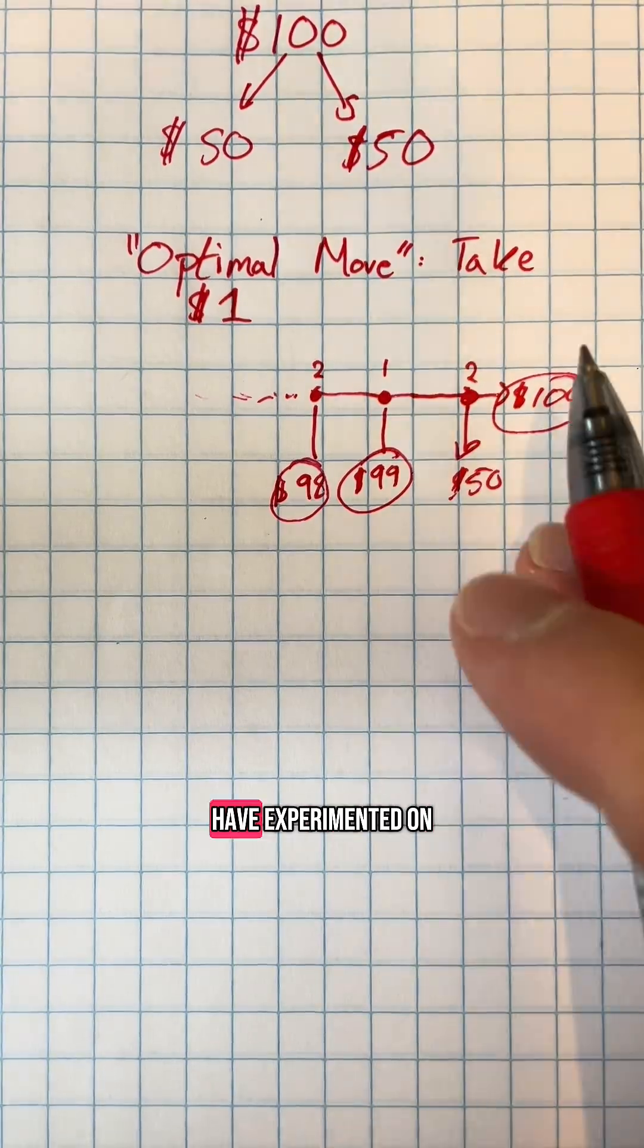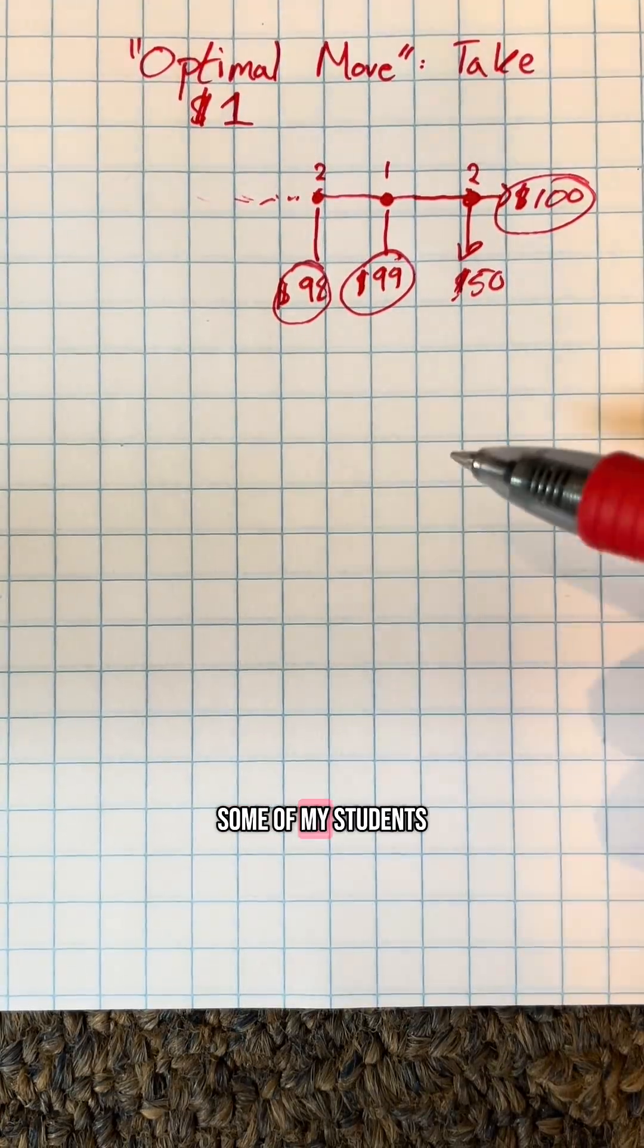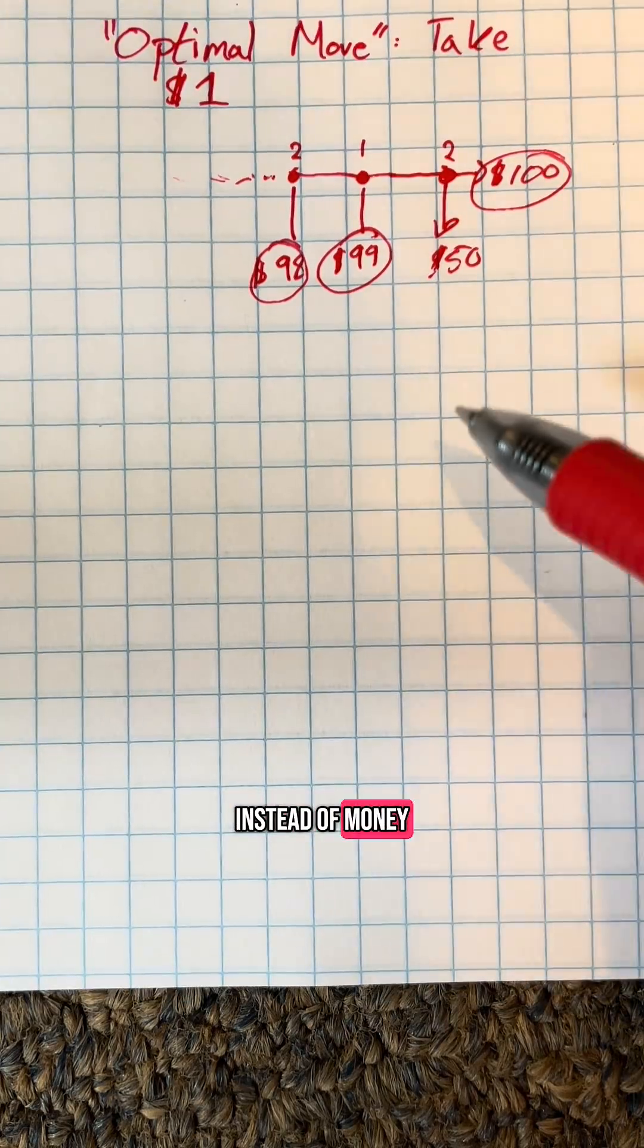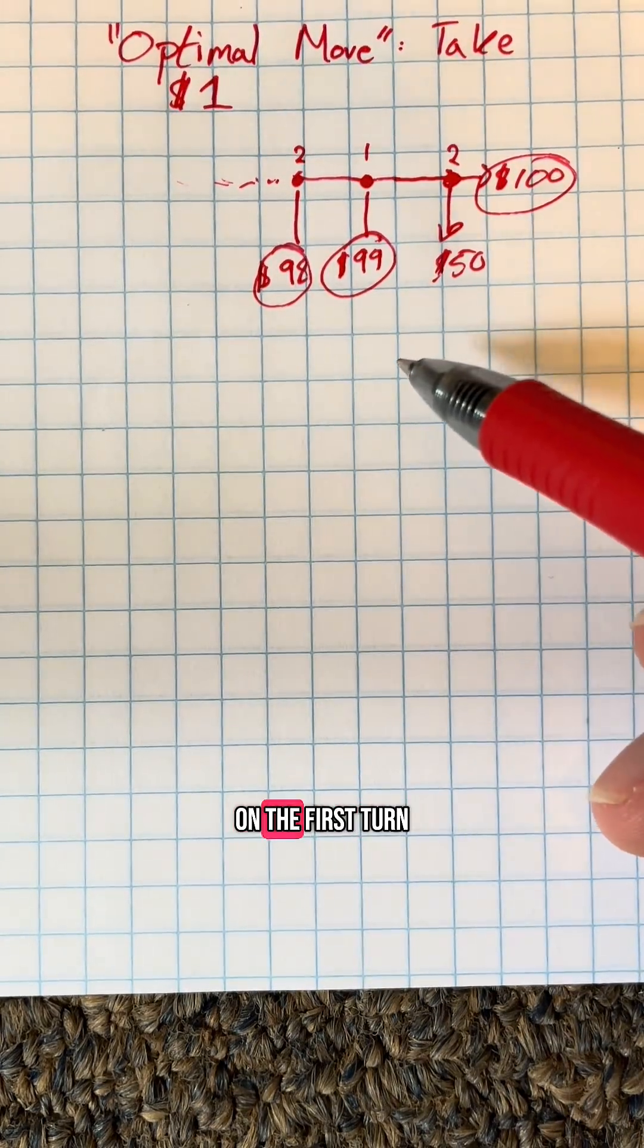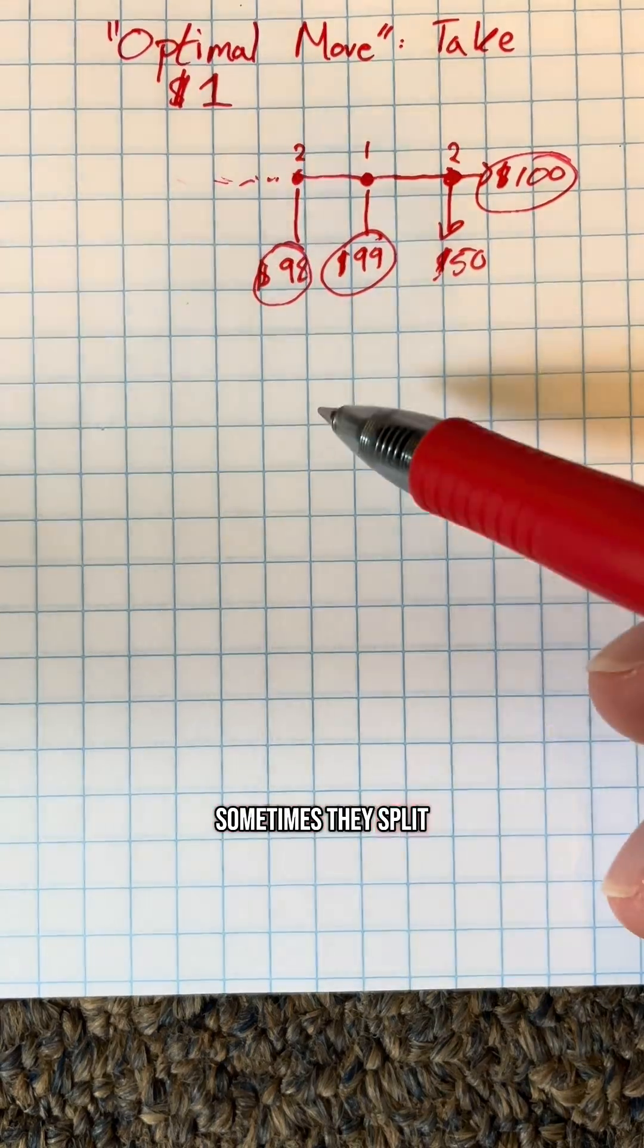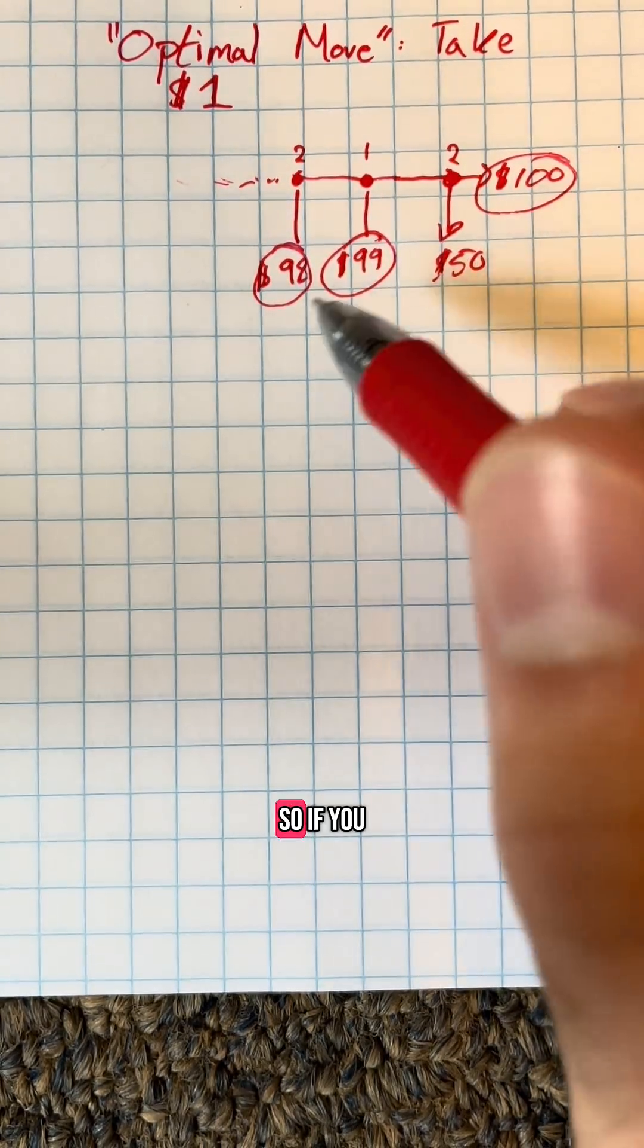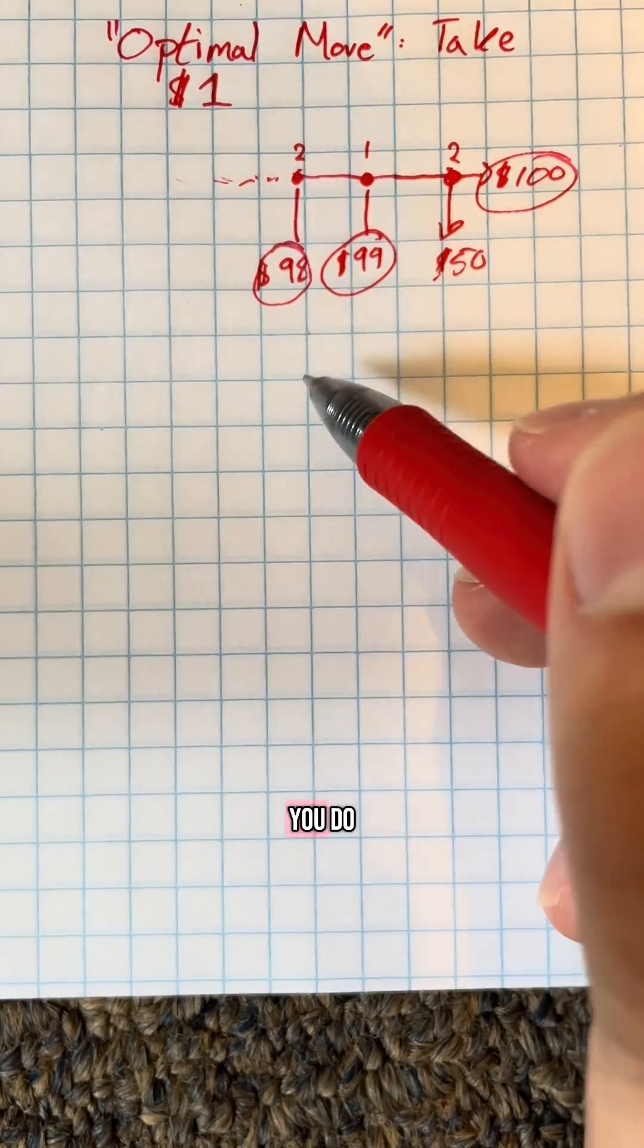However, when I have experimented on this game with some of my students with extra credit instead of money, my students never end the game on the first turn. In fact, sometimes they split, and sometimes they betray each other about halfway through the game. So if you were in this game, what would you do?